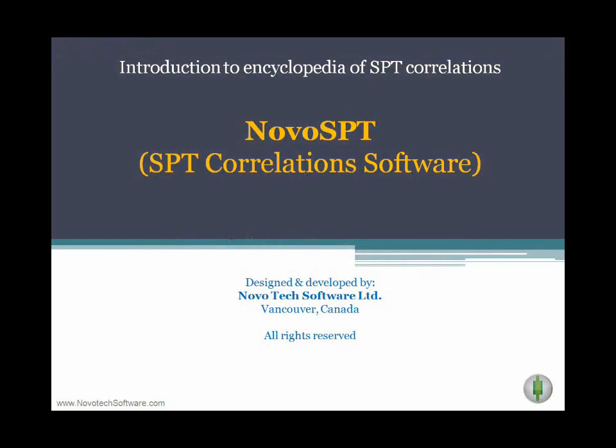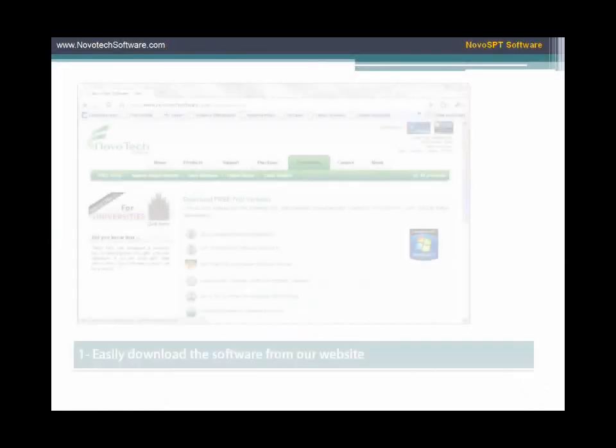NovoTech Software has spent years gathering hundreds of these proposed SPT correlations. More than 250 SPT correlations from 60 academic research books and papers are implemented in the Novo SPT program, along with powerful features for organizing the correlations — such as statistical charts, reports, the import and export of data, and more. In this presentation we briefly review the key features of the SPT correlations program, that is Novo SPT.